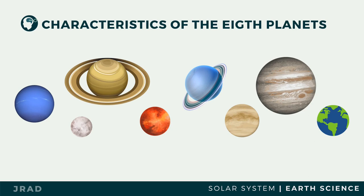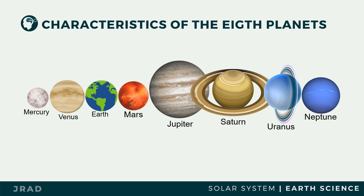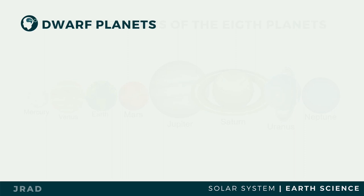As of now, we have eight known planets: Mercury, Venus, Earth, Mars, Jupiter, Saturn, Neptune, and Uranus. The farther the planet from the Sun, the faster its rotation but the slower its revolution.